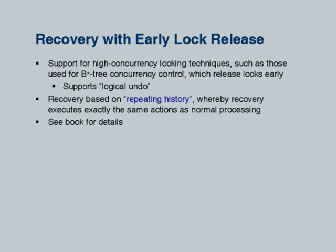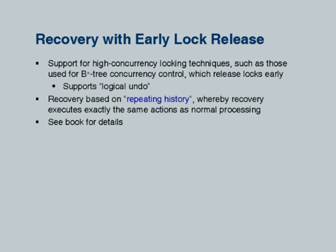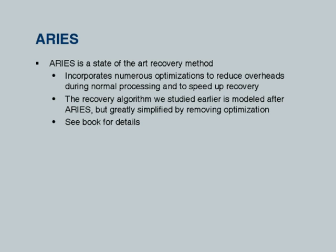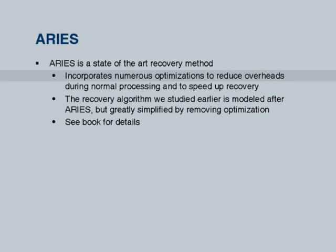Early lock release without holding a lock in two-phase manner causes problems for recovery, addressed in the section on recovery with early lock release. This algorithm is essentially the same as the advanced recovery algorithm from the previous edition, cleaned up with better explanations and more examples. ARIES is a widely used industrial recovery algorithm that does all of this with additional optimizations to speed up recovery, which are described in the book.